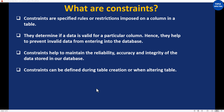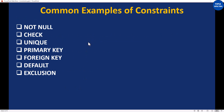Hi everyone. In my last video I explained what constraints are. I made you realize that constraints are specified rules or restrictions that you impose on a column in a table, and it helps you to determine if data is valid for a particular column. It also helps you to maintain the reliability, accuracy, and integrity of the data stored in your database. We looked at common examples of constraints including not null and check constraints, and previously I explained primary key and foreign key. Today we are going to be looking at unique constraints and default constraints. Let us go to pgAdmin and understand what unique constraints are.